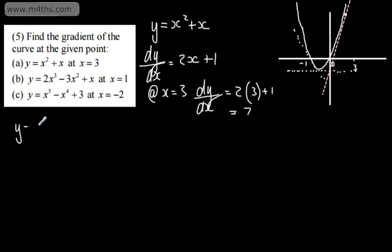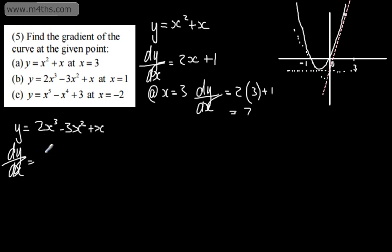y is equal to 2x cubed minus 3x squared plus x, and we need this at x is equal to 1. So the gradient function dy by dx is 6x squared minus 6x plus 1. Check with your teacher or your examining board exactly the level of work you may want to show — that is me being fairly simplistic.